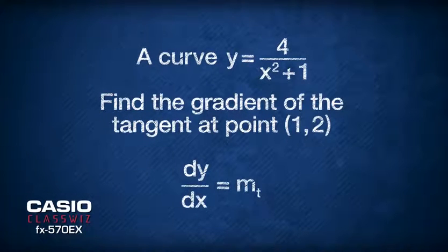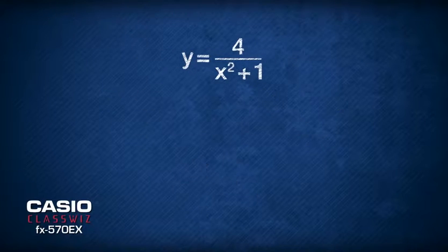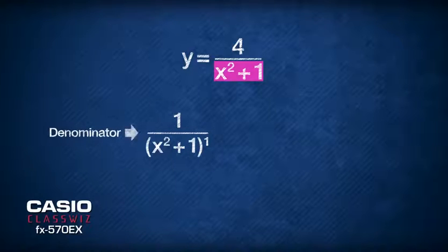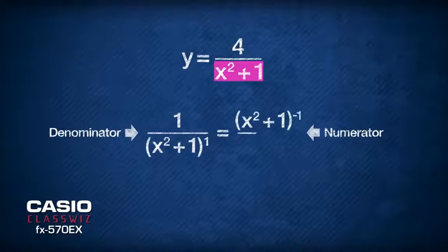The equation to find dy/dx. Notice that the term of x to be differentiated is in the denominator, so we need to shift it to the numerator. To bring the function x squared plus 1 from the denominator to the numerator, it needs to be written as (x squared plus 1) to the power of negative 1, and now it can be placed in the numerator section.